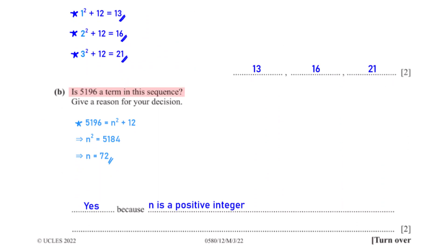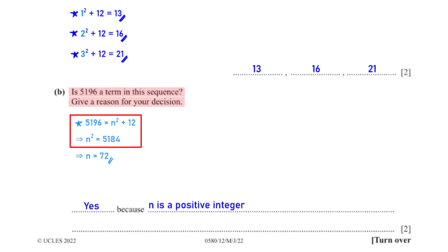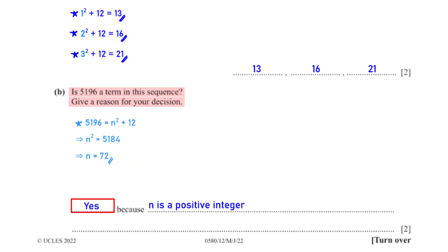Is 5196 a term in this sequence? Give a reason. To check, we equate 5196 to n² + 12. Subtracting 12 from both sides and taking the square root gives n = 72. Our answer is yes — 5196 is a term in the sequence because we got an integer value for n, which is 72.